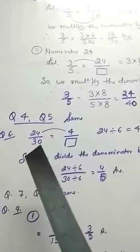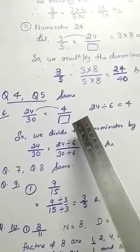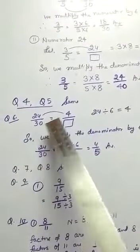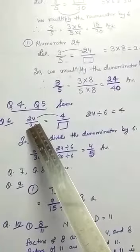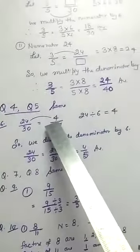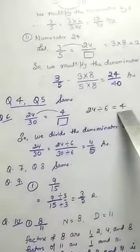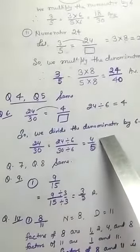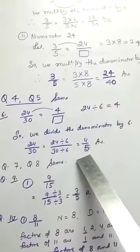Question number 6. Find the equivalent fraction of 24/30 having numerator 4. This means the numerator is less than before. 6 times 4 equals 24. So going right to left, 24 divided by 6 equals 4. This means you divide the denominator by 6. So 30 divided by 6 equals 5.